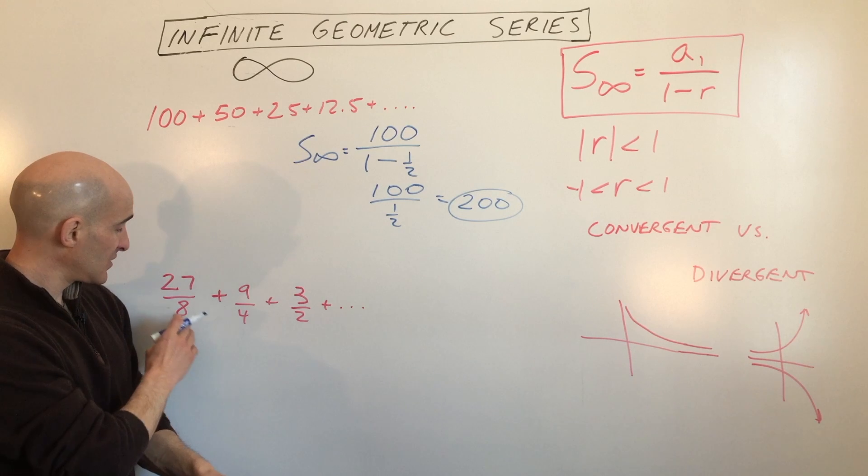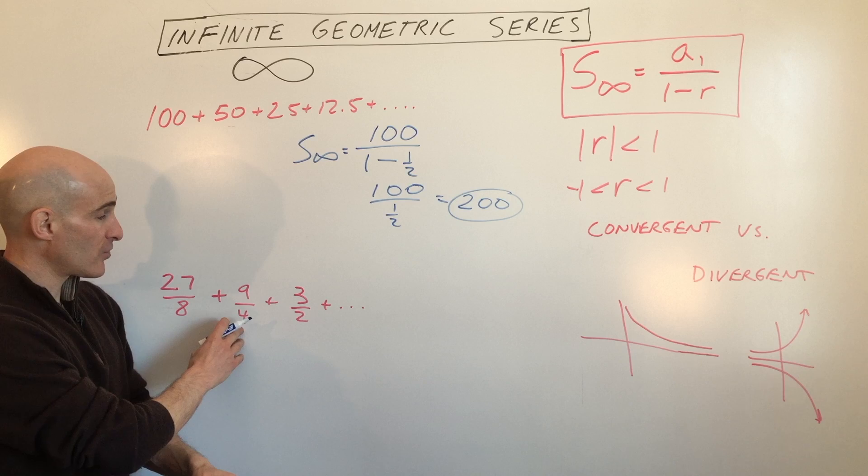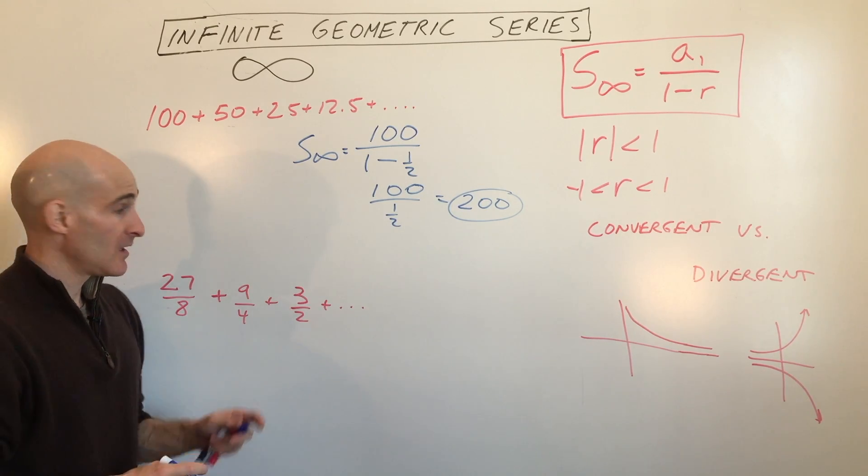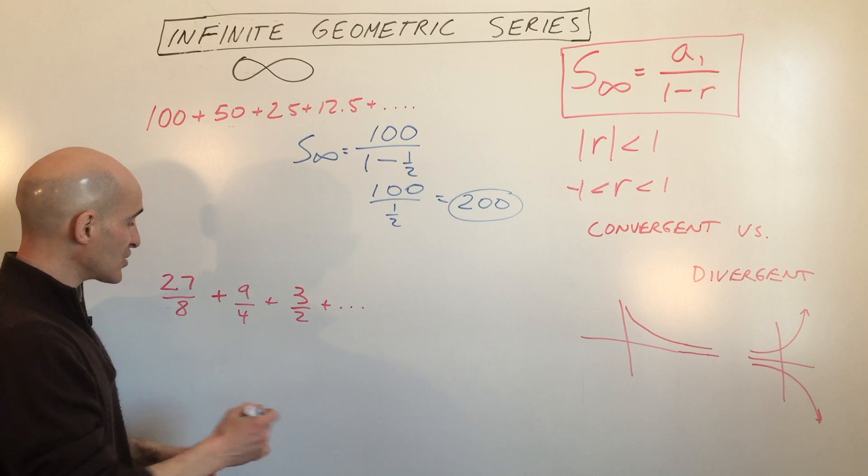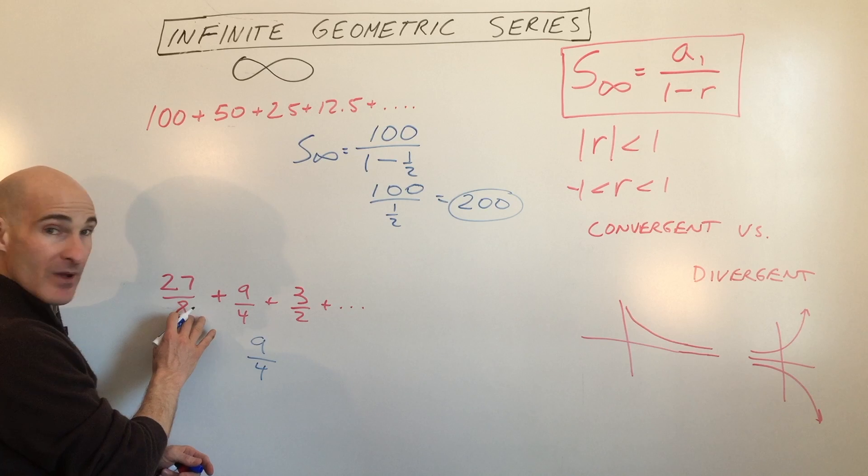Let's look at another example. Let's look at this one here. Here, we've got 27 eighths plus 9 fourths plus 3 halves. What are we multiplying by to get to the next term here? This is a little bit more challenging because of the fractions. But again, what you can do is you can take any term and divide it by the previous term.